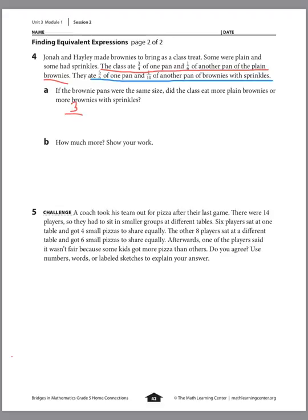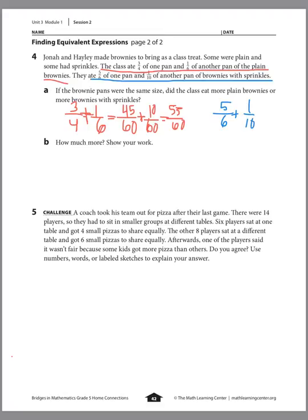What's 3 fourths plus 1 sixth? Thinking about time, 3 fourths is 45 minutes or 45 sixtieths, and 1 sixth is 10 minutes or 10 sixtieths. So 45 sixtieths plus 10 sixtieths equals 55 sixtieths for the plain brownies. Now for the sprinkles: 5 sixths plus 1 tenth. 5 sixths of a clock is 50 minutes or 50 sixtieths, and 1 tenth is 6 sixtieths. So the sprinkles total is 56 sixtieths. The class ate more sprinkle brownies.